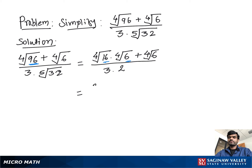So we have 2 times 4th root of 6 plus 4th root of 6 divided by 6.